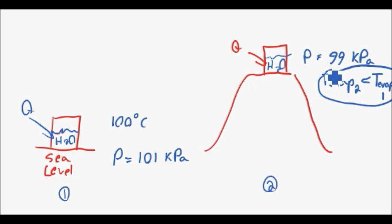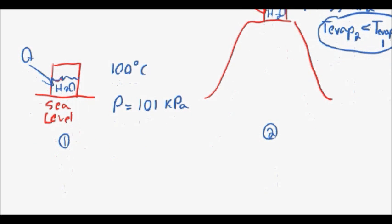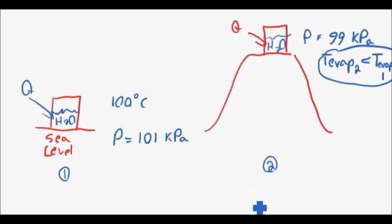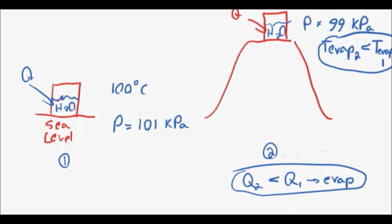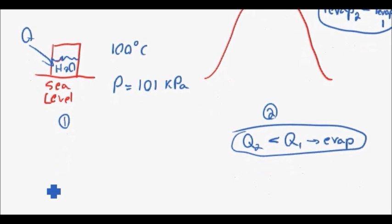This is a very important concept because temperature is related to the amount of heat you have to add. Based on this, it takes less heat — Q2 is less than Q1 — to evaporate the water at lower pressure. Pressure plays a significant role in phase changes. In the next video we'll be starting to talk about the solid phase and how it plays a role in the pressure-specific volume-temperature relationship. Thank you for watching, and please comment, like, or share if you found it helpful.